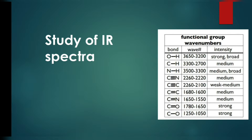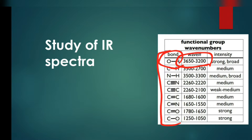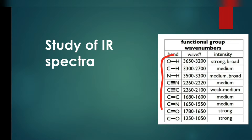First of all, what you need to do is memorize these values. The OH bond gives the wave number between 3200 and 3650. Similarly, the other functional groups give wave numbers according to their vibrations.